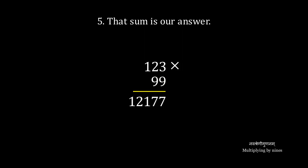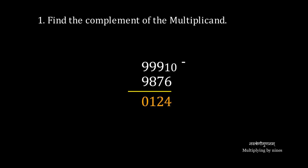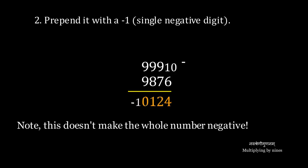Let's try another one. Here, a four-digit number times 999. We find the complement of our number. We prepend it with a single negative digit. Note that the zero in the complement is not dropped.